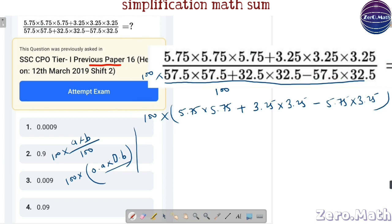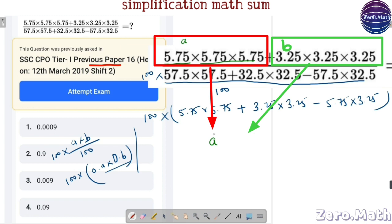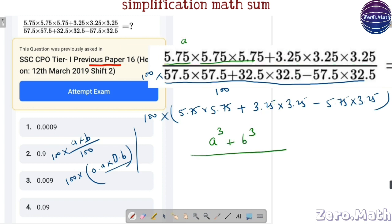Let's quickly solve this question. So, we will have 5.75 as a. I can write it as a cubed because it is 3 times. Plus 3.25 is my b, I can write it as b cubed. Divide it by 100 times.